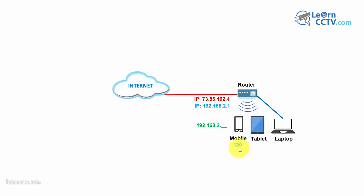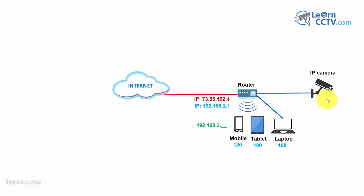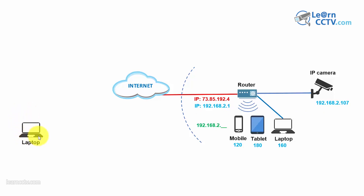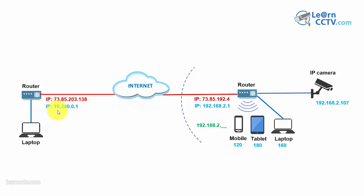For example, the mobile ends with 120, the tablet 180, and the laptop 160 — so that would be 192.168.2.160. When you have an IP camera, it's the same principle: it gets an IP connected to the router, and all devices are located on the internal network.